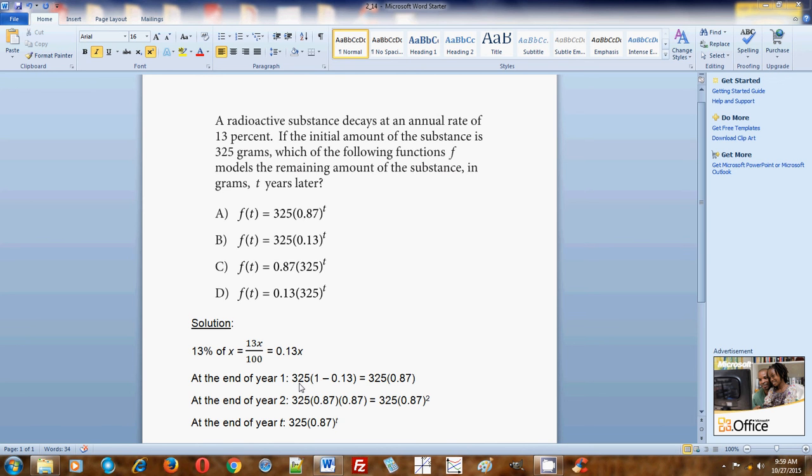325 grams, we subtract 13% from the whole amount, which is 1, because the whole amount is 325 grams. So we subtract 13% because it lost 13% in weight of the original amount. And what we have remaining is that 1 minus 0.13 is going to be 0.87. So at the end of the year, 87% of the original amount will remain.